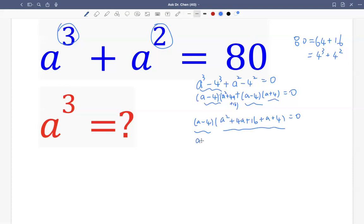By the zero property, this factor can be zero, which gives us a = 4. And then let's check to see if this could possibly be zero. So we have a² + 5a + 20. Can this be zero? No, right? Because we're limiting ourselves to the realm of real numbers. We don't want to get involved with complex numbers for this question.